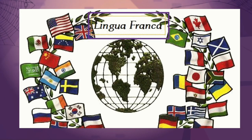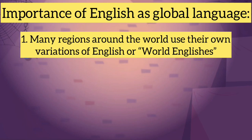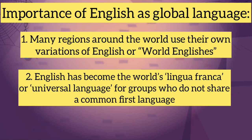As you have noticed, the English language plays a vital role in global communication. The importance of English as a global language has manifested itself in two primary ways. First, many regions around the world use their own variations of English, called World Englishes. Second, English has become the world's lingua franca, or universal language, for groups who do not share a common first language.